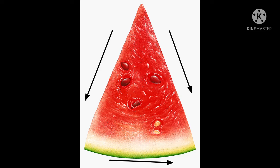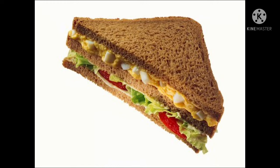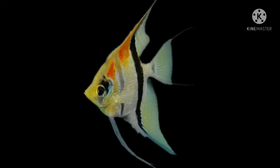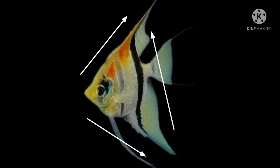Next is a slice of watermelon — this is also triangle in shape. It has three sides and three corners. Now the next picture is a sandwich — yummy! Do you like to eat sandwiches? What is the shape of a sandwich? Triangle! It has three sides and three corners. And look at this beautiful fish — this is called an angel fish, and this fish is also triangle in shape.